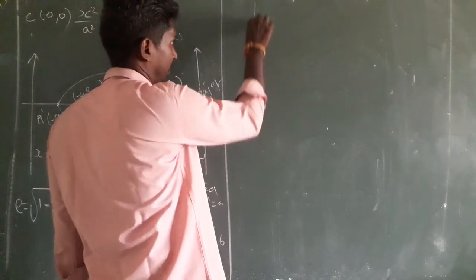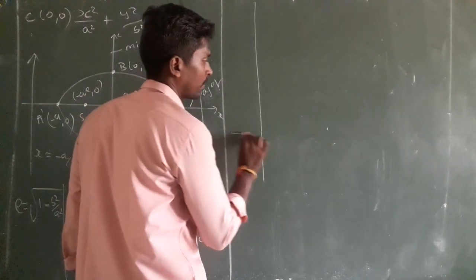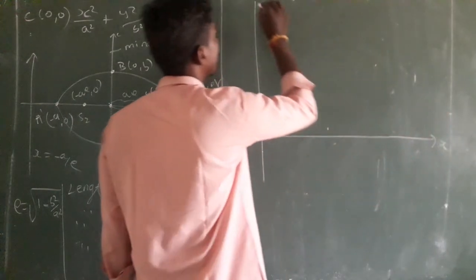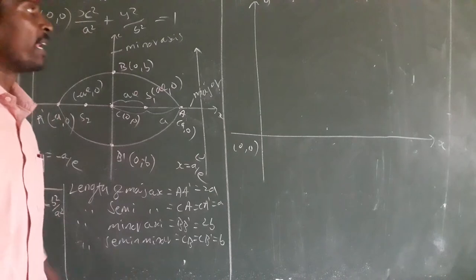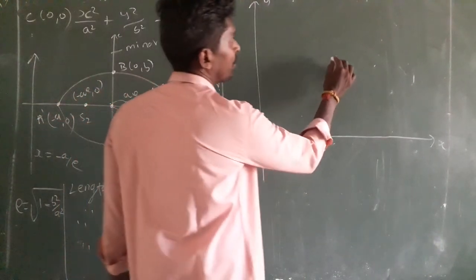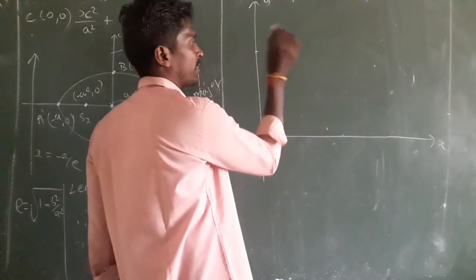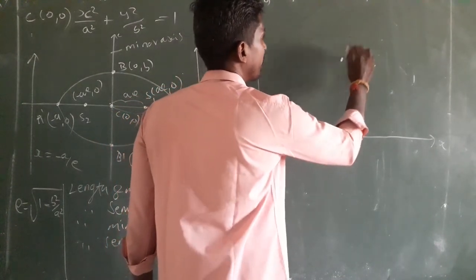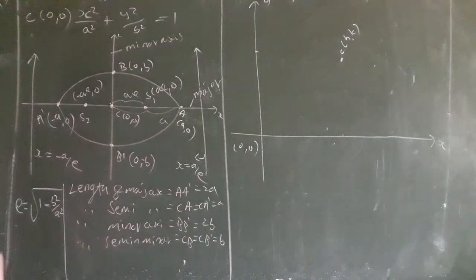Now we take center at (0,0) — this is for reference. Now we are going to take center at (h, k). So any one point on the x-axis at distance h. Center is at (h, k). Already told — this is the center and the focus.